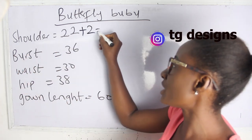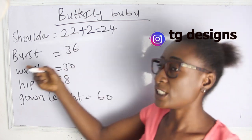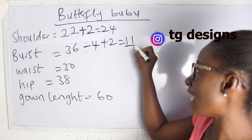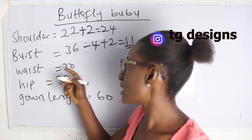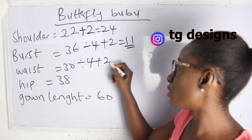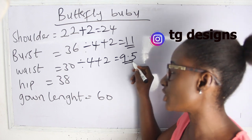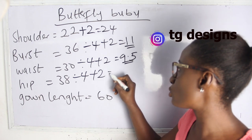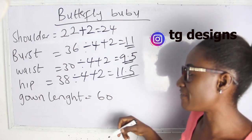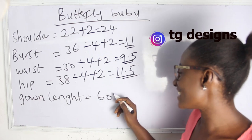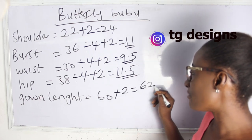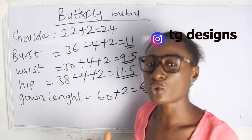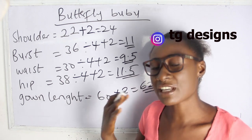Let's calculate our measurements. Shoulder measurement: 24 inches. Bust is 36 — 36 divided by 4 plus 2 gives us 11 inches. Waist is 30 — 30 divided by 4 plus 2 gives us 9.5 inches. Hip is 38 — 38 divided by 4 plus 2 gives us 11.5 inches. Gown length is 60 plus 2, giving us 62 inches. These are the basic measurements required for your butterfly booboo dress.